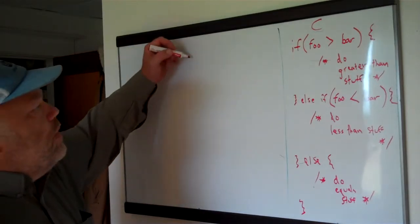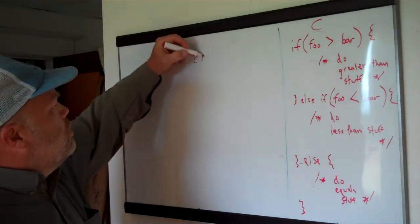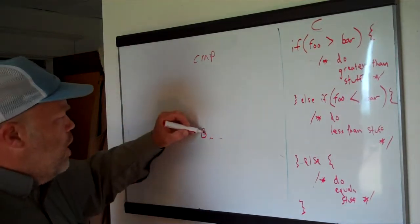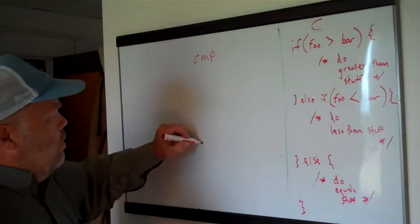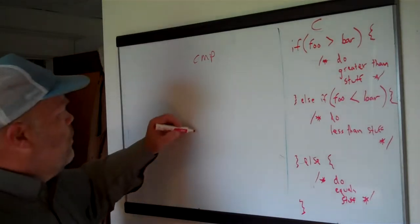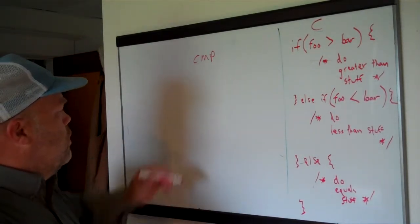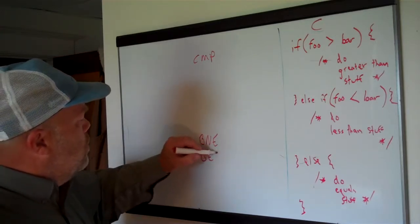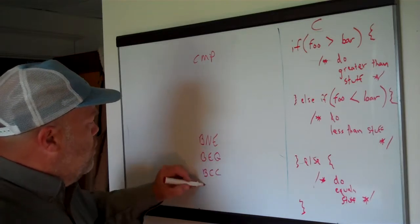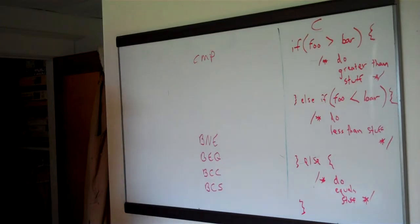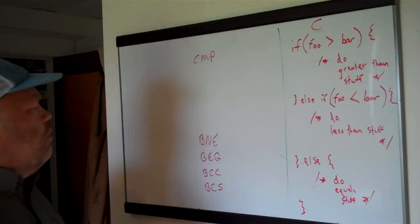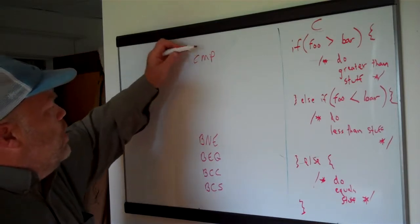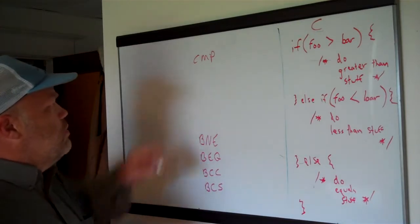An if in assembly — at least in 6502 assembly — usually boils down to a compare and then a branch of some sort, a relative jump. They all start with B for branch. The four that we're going to use here for examples are: branch if not equal (BNE), branch if equal (BEQ) — those two are just opposites — and then branch if carry clear (BCC) and branch if carry set (BCS). There are four others, but you're not going to use those nearly as often. Usually you're going to have a compare followed by one or more branches based on the result of that compare.